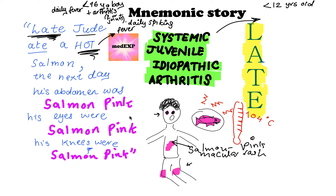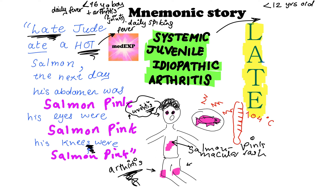His eyes were salmon pink — remember pink or redness, anything with '-itis' at the end means inflammation, and inflammation is redness or pink. So the salmon-pink eyes should remind you that these patients get uveitis. And the salmon-pink knees represent arthritis with more than one joint involvement. For any clinical purpose, your most important takeaway is a young boy presenting with a daily fever and arthritis.